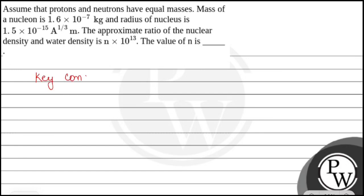The key concept used here is properties of nucleus. We are given the mass of nucleus and the radius of the nucleus, and we need to find the ratio of densities.